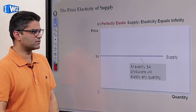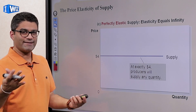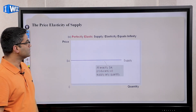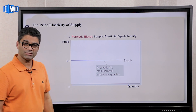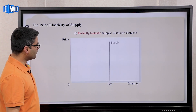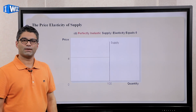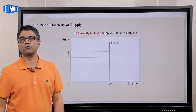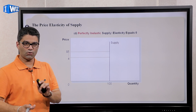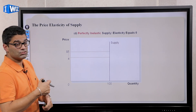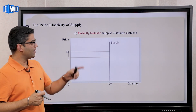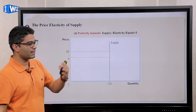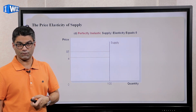Perfectly elastic is if the line is horizontal — this looks identical to the demand side; both demand and supply would be horizontal if the curve is perfectly elastic. The perfectly inelastic supply curve is going to be where the line is vertical, so you can change the price as much as you want and the quantity supplied is not going to change.